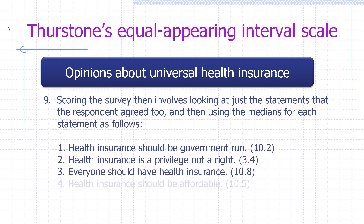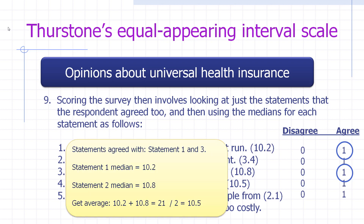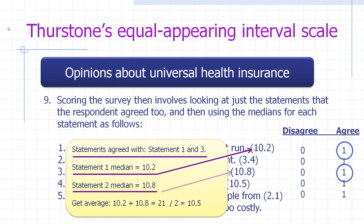In scoring the survey, you look at only the statements the respondent agreed with and use the medians for each of those statements. For example, if a person agreed with statements one and three, and statement one's median was 10.2 and statement three's median was 10.8, you average those: 10.2 plus 10.8 equals 21, divided by 2 equals 10.5. That 10.5 is this person's score on the scale. As you can see, it's very complicated, but I hope this helped.